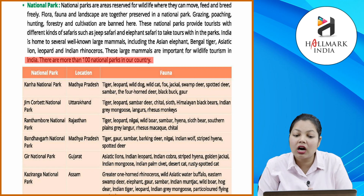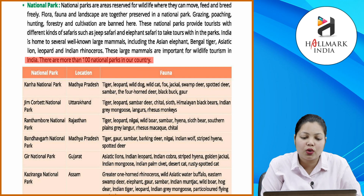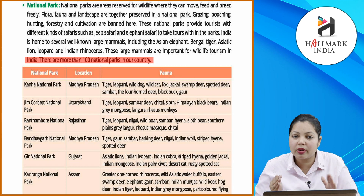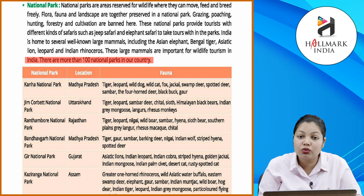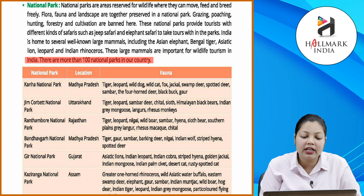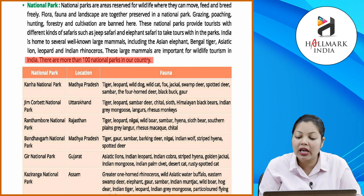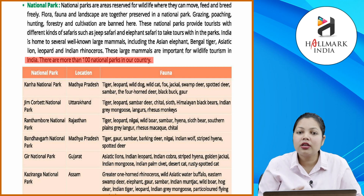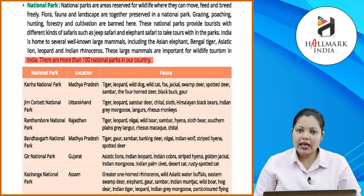National parks are reserved areas for wildlife where animals can freely move, feed, and breed. Flora, fauna, and landscape are preserved together. Grazing, poaching, hunting, forestry, and cultivation are banned. Tourists visit for safaris including elephant safari. India has well-known mammals like the Asian elephant, Bengal tiger, Asiatic lion, leopard, and Indian rhinoceros — important for wildlife tourism — and over a hundred national parks.